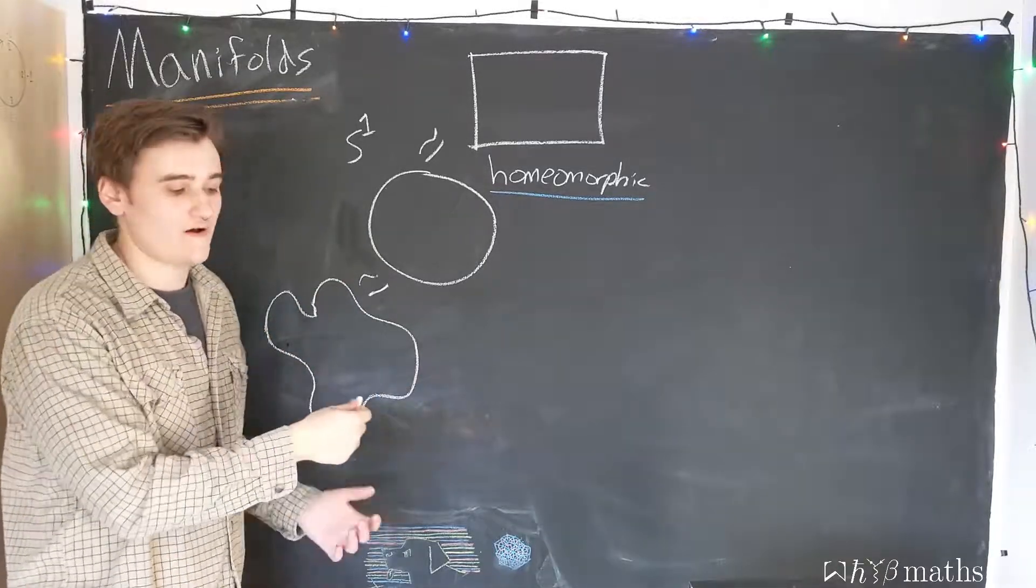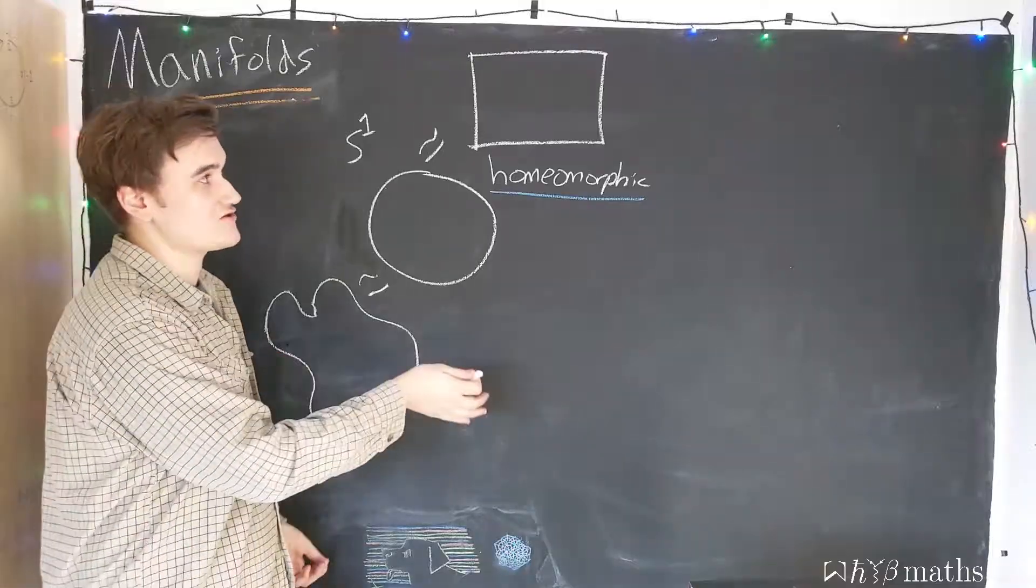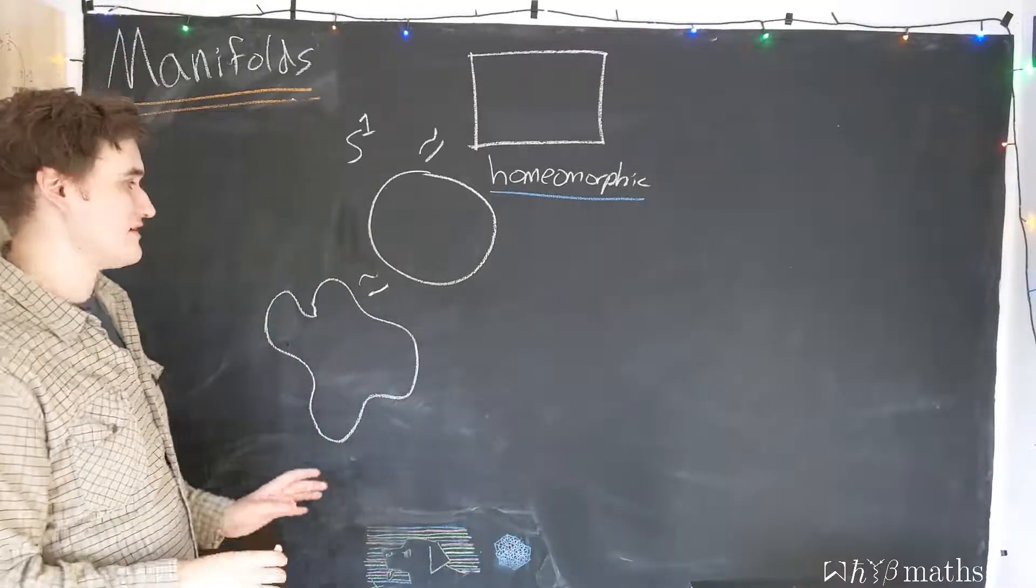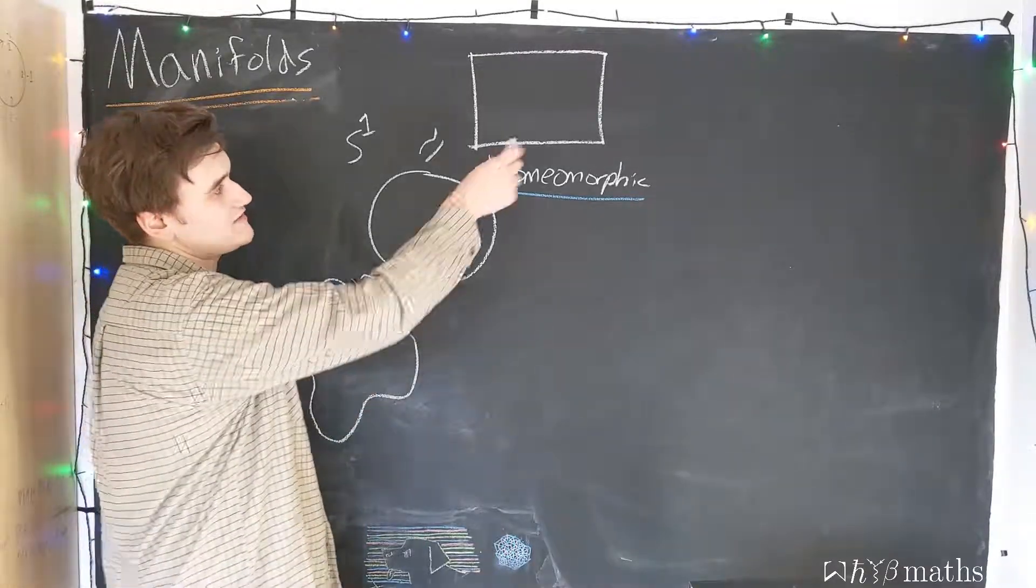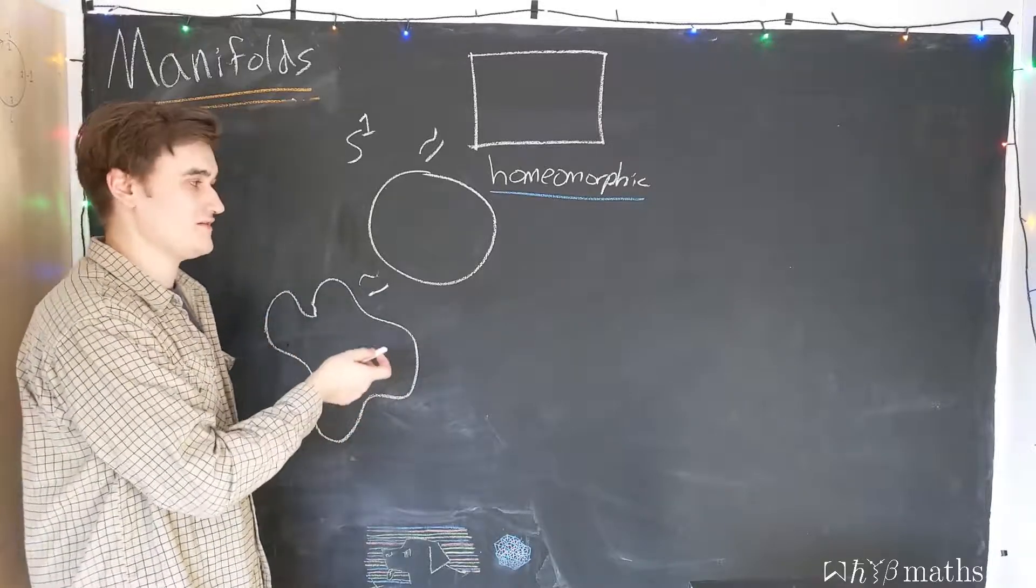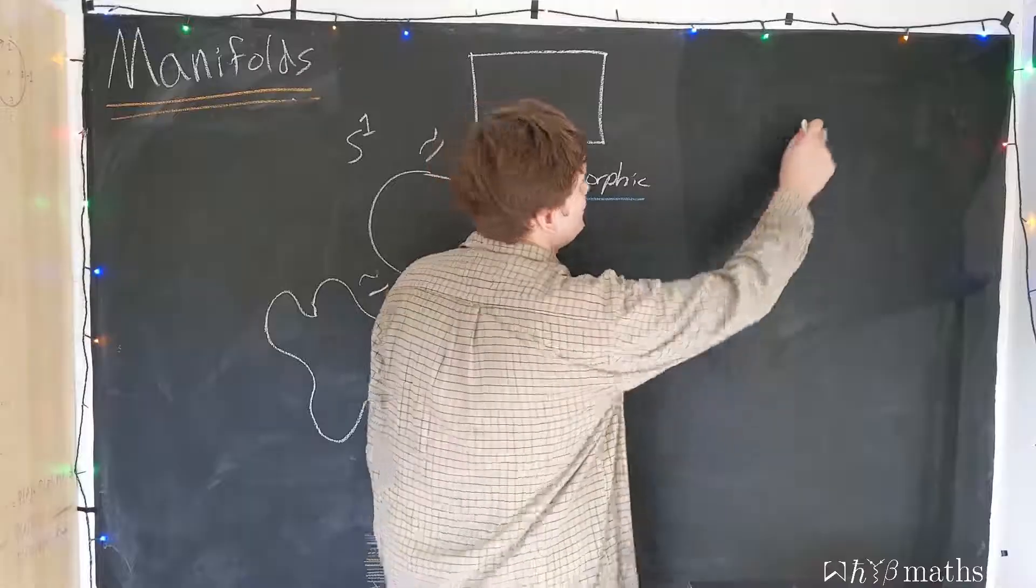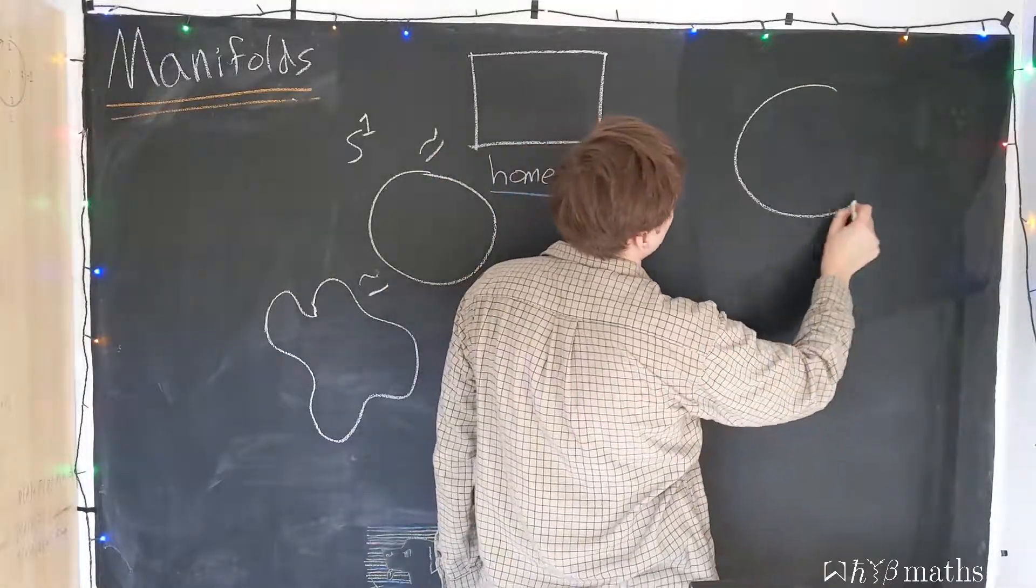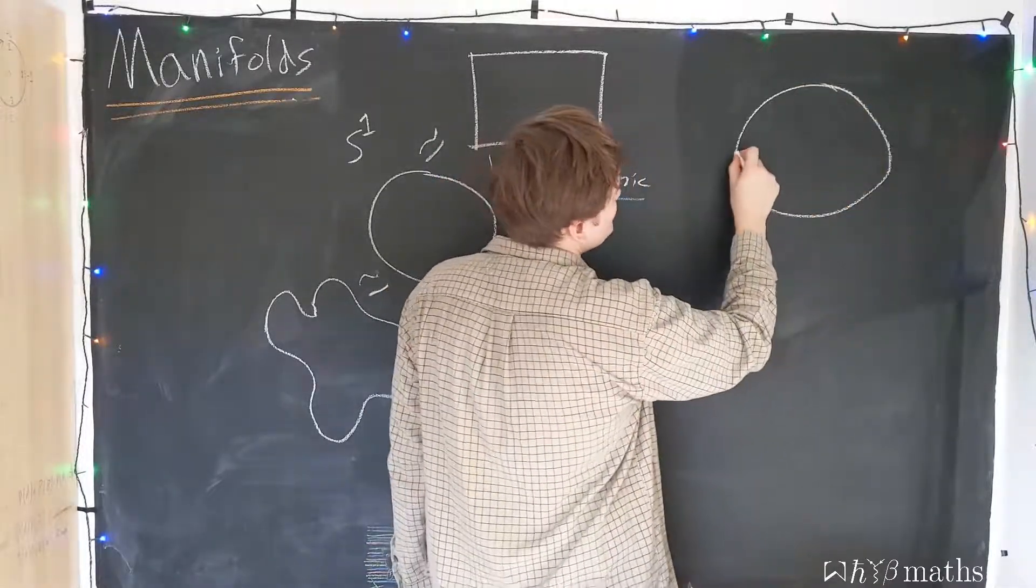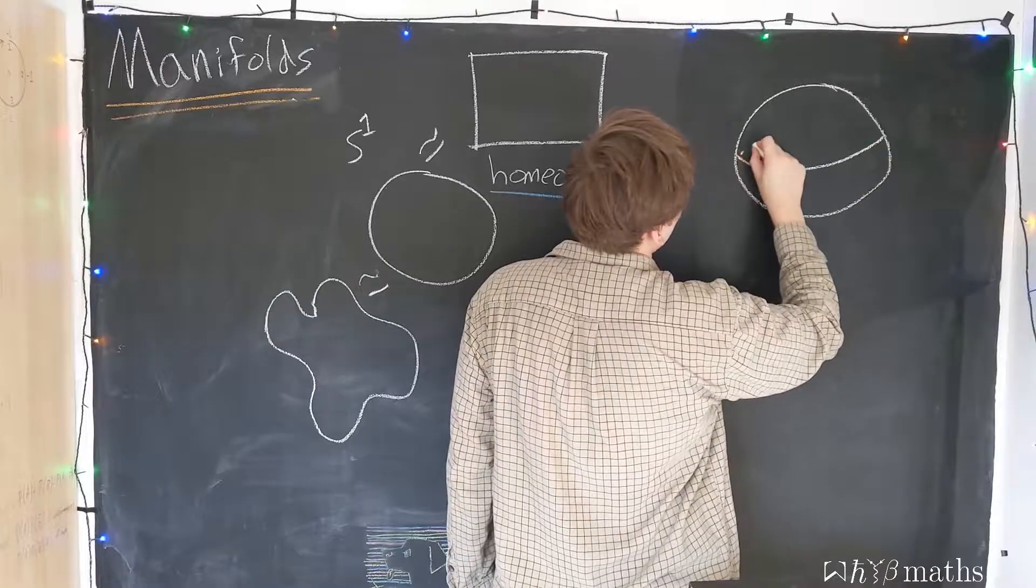Geometry comes much later when we define things like metrics and connections. We'll get there eventually. But for now, all of these shapes are considered to be equivalent. So, there are lots of other topological spaces we could construct, such as the sphere, which is a two-dimensional topological space.